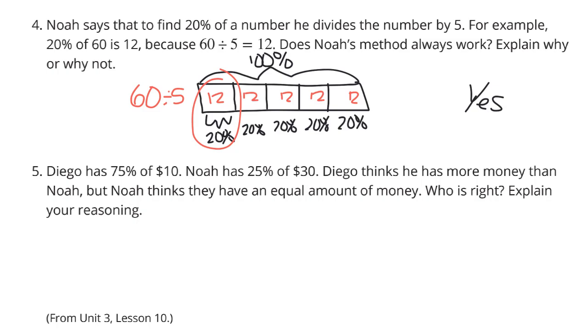Diego has 75% of $10. Noah has 25% of $30. Diego thinks he has more money than Noah, but Noah thinks they have an equal amount of money. Who's right? Explain your reasoning. And again, on these types of questions, pictures can always help. Now, 75% breaks down into fourths.